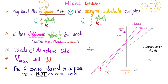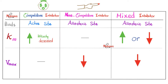Mixed inhibitors sometimes bind to the enzyme alone, in which case affinity decreases and KM goes up. Or they might bind to the enzyme-substrate complex, where the love bond between them is high and KM is low. Mixed inhibitors can bind either, with different affinity for each — that's what distinguishes them from non-competitive inhibitors. Like most inhibitors, mixed inhibitors bind the allosteric site and VMAX will decrease. KM might increase or decrease depending on which complex they bind.